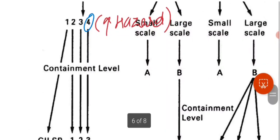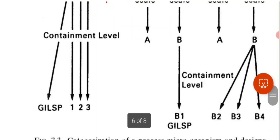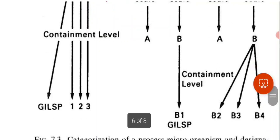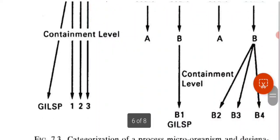Based on increasing hazard level, we have groups 1 through 4. For group 1 organisms, we apply GILSP — Good Industrial Large Scale Practices — which are the basic precautions taken in a lab, such as wearing a lab coat, eye guards, and sanitizing.